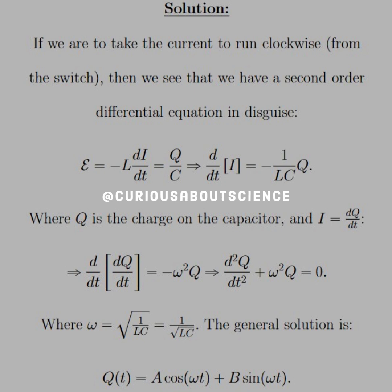All right, so our solution starts off. If we were to take the current to run clockwise, accordingly from the switch, then we see that we have a second order differential equation in disguise. Namely, if we sum up all the voltages, we see that the EMF is equal to negative L times dI/dt, but that's also equal to the voltage from the capacitor, which is Q/C. Again, we were told it was charged, so we have the capacitor there to deal with.